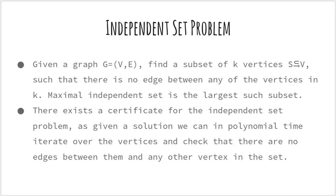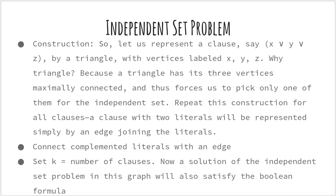Now we will look at a few interesting problems. The first is the independent set problem, which asks: given a graph G, can you find a subset of K vertices such that there is no edge between any of the vertices in that subset? The maximal independent set problem is the question of finding the largest such subset. There exists a certificate for the independent set problem — if someone gave you the K vertices in graph G, you can easily iterate over the vertices and check that none of them have an edge to any other vertex in that subset. This shows that the independent set problem is in NP. Now we need to show that the independent set problem is NP-complete — to do this, we will pick a problem to reduce to it. We have just seen the 3SAT problem, so we will choose that problem to reduce to the independent set.